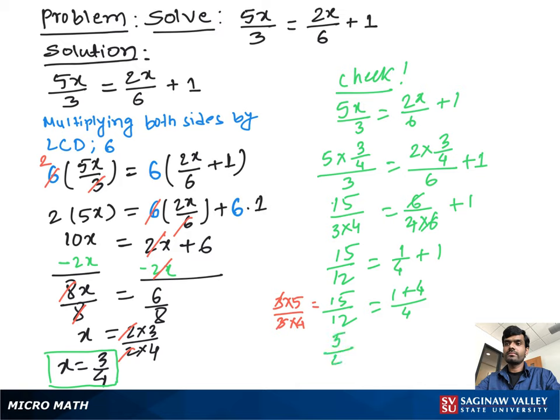Now the factor of 15 is 3 times 5 over 3 times 4. 3s cancel out. So we get 5 over 4 equal to 5 over 4. It means the solution is right.